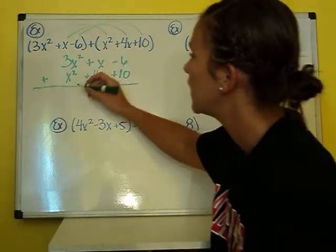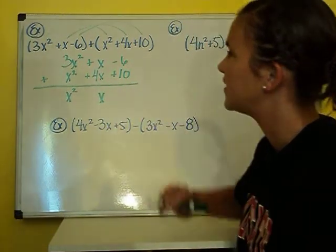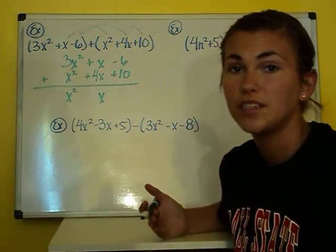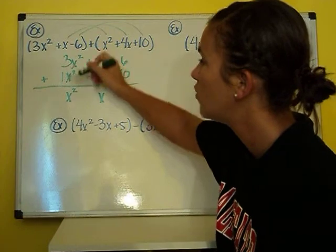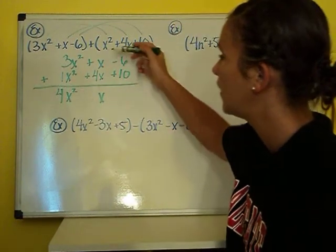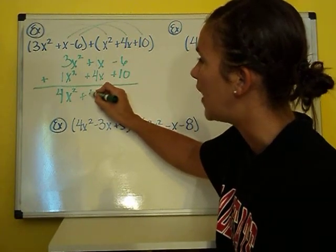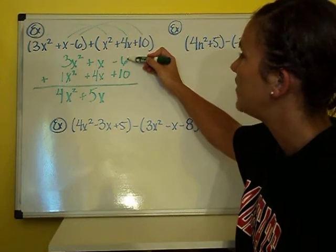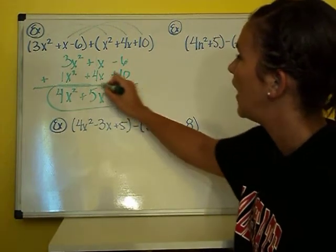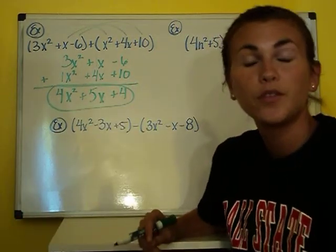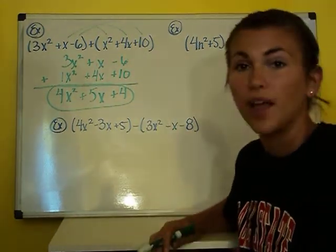Now I just add like terms. All labels stay — I'll have an x squared, an x, and a constant. Adding coefficients: 3 plus 1 is 4, giving 4x squared. 1 plus 4 is positive 5, giving 5x. Negative 6 plus 10 is 4. So the answer is 4x squared plus 5x plus 4. You can use either the shapes method or the vertical method — this is just another way to do it.